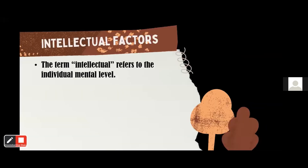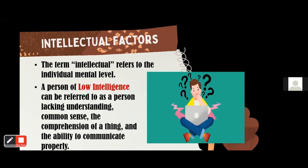Intellectual factors. The term intellectual refers to the individual's mental level. Students learn according to their level. There is what we call high intelligence and low intelligence. High intelligence students are fast learners — they have high IQ and the ability to learn quickly. While low intelligence students are slow learners — they are typically below average intelligence.